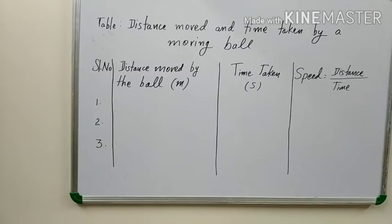Now children, you have to measure the distance between the point at which the ball crosses the line and the point where it comes to rest. For this, you can use a scale or a measuring tape.